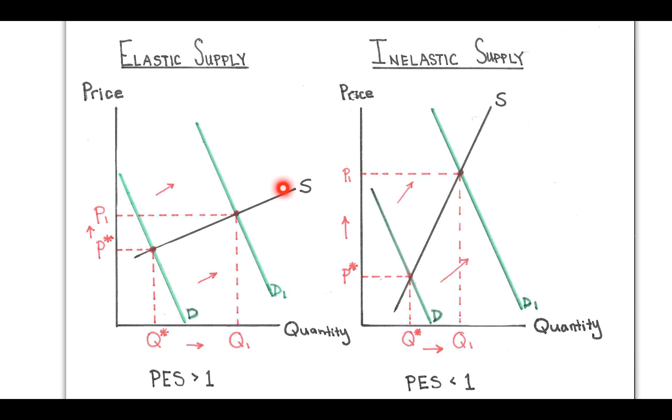However, when dealing with inelastic supply, and that value would be when PES is less than 1, we have a relatively vertical supply curve. So this is steeper than the elastic supply curve.